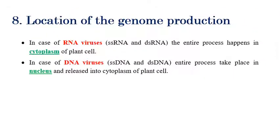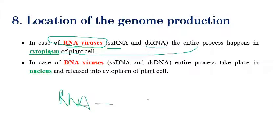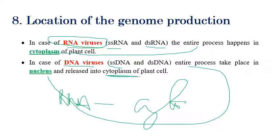Regarding the location of genome production: if the virus genome contains RNA — whether single-stranded or double-stranded — the entire replication process occurs in the cytoplasm of the plant cell. If the virus contains DNA as its genome, the entire process takes place in the nucleus but the particles are released into the cytoplasm. Therefore, RNA viruses are multiplied in the cytoplasm, whereas DNA viruses are multiplied in the nucleus — this is a very important distinction.